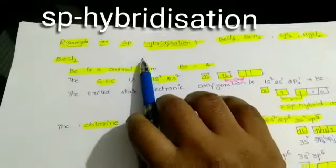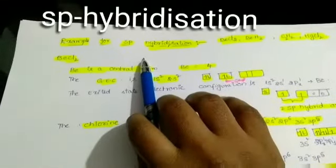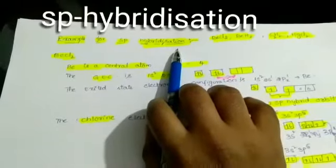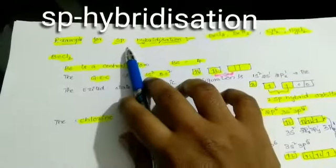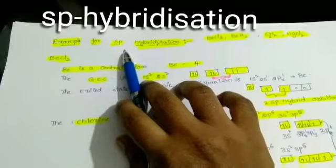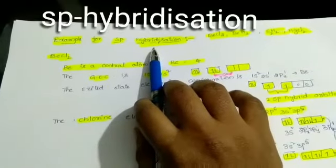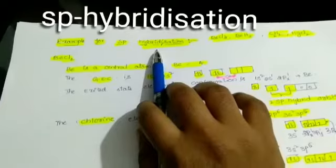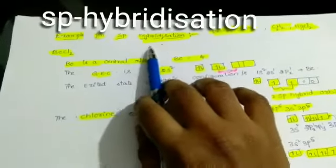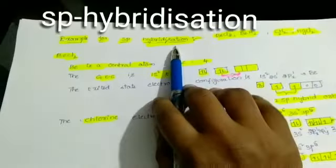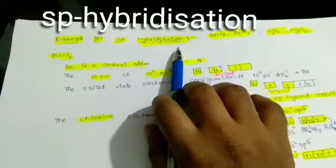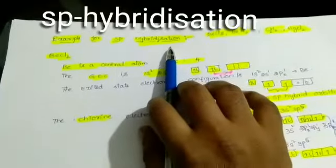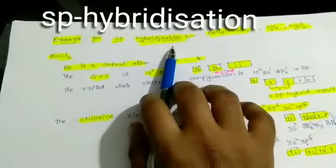SP hybridization is defined as one S orbital and one P orbital, belonging to the same valency shell of an atom, intermixing to combine and form two SP hybrid orbitals. This process is called SP hybridization.